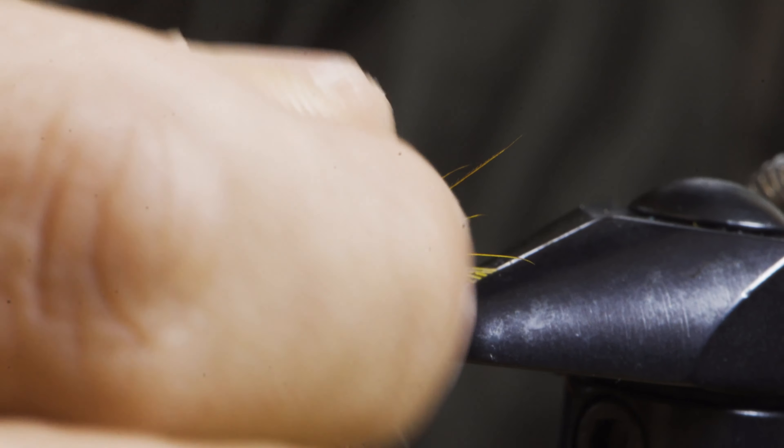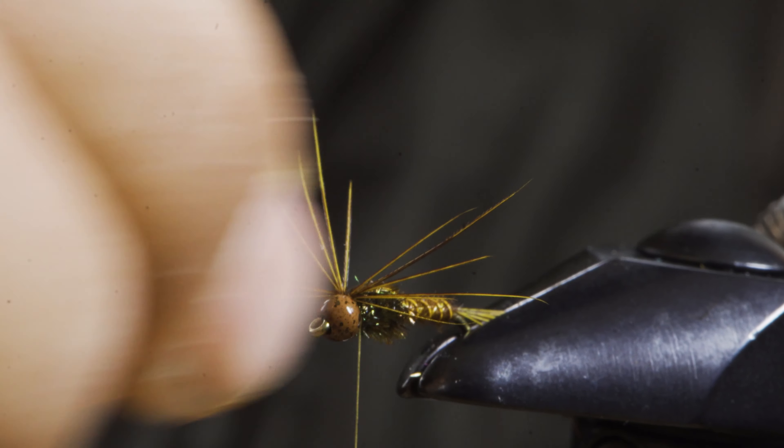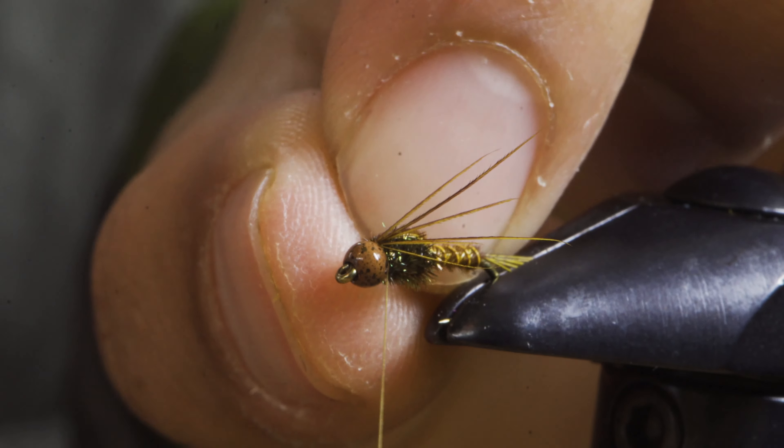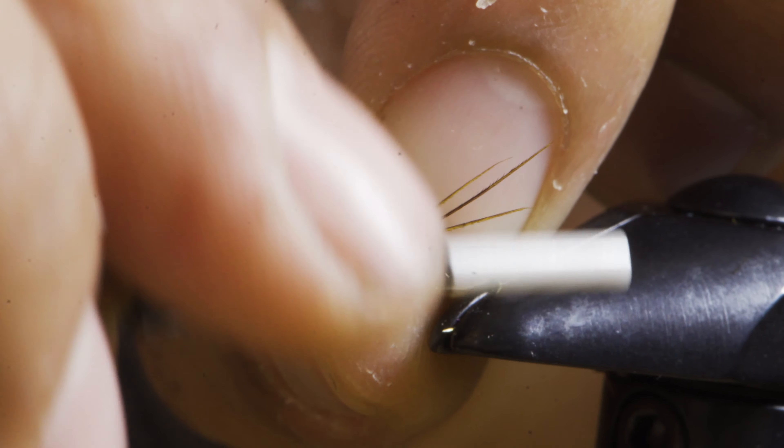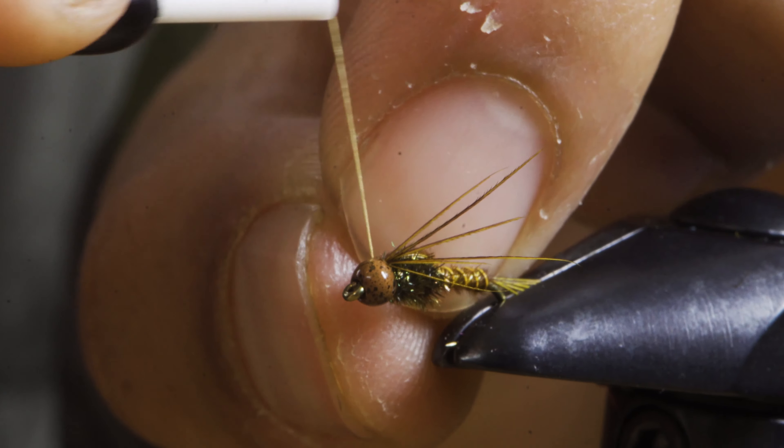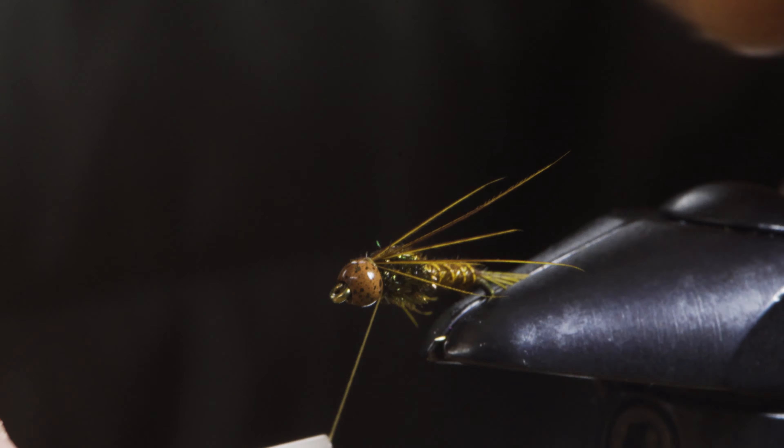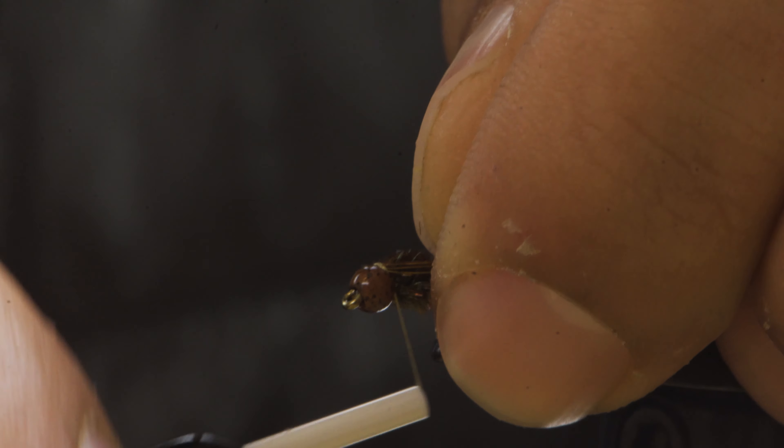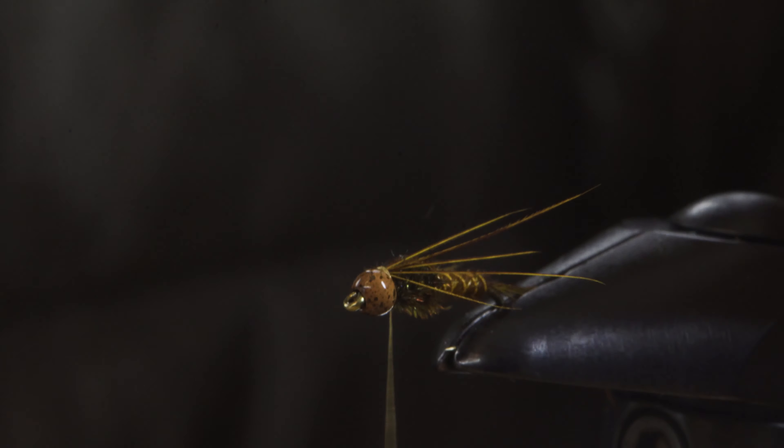Now, the less room you give yourself on these pheasant tails, the more you're going to have to finagle them at the end here. The longer fiber you use, the easier it is to tie in. And I think the less realistic the taper of the fiber looks though.